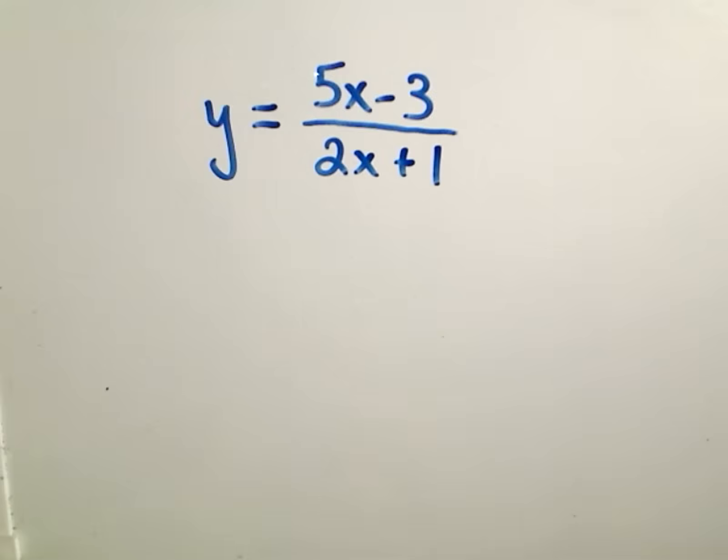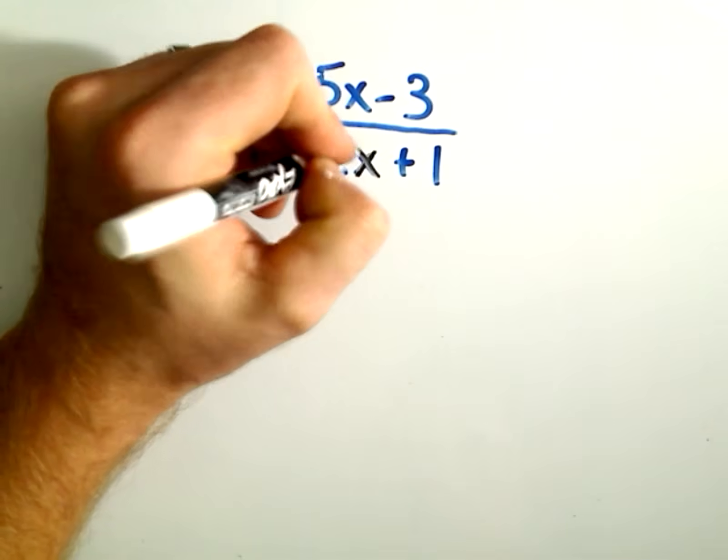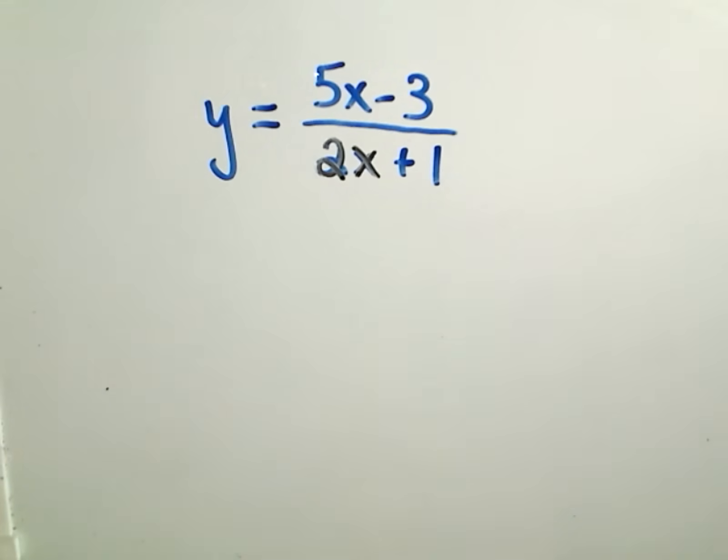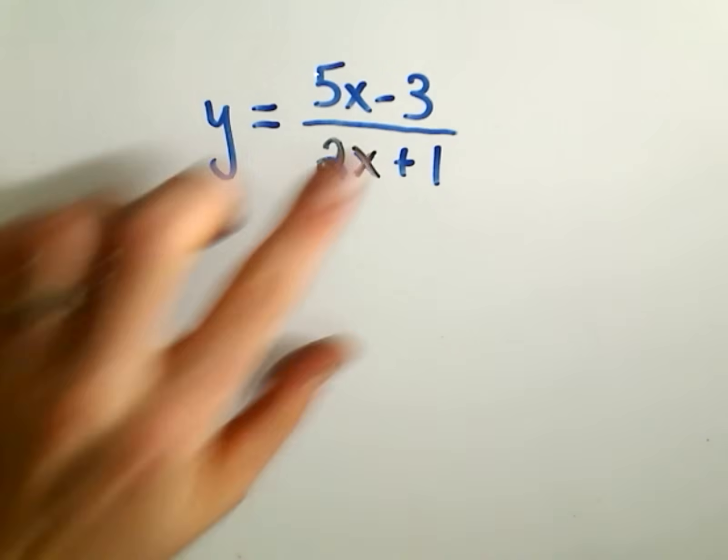So suppose we have the function y equals 5x minus 3 over 2x plus 1. And again, we want to find the inverse of this function, assuming one exists, and it does. Again, for a function to have an inverse, it has to have that property of being 1 to 1 or passing the horizontal line test. So you could just graph these to determine that.